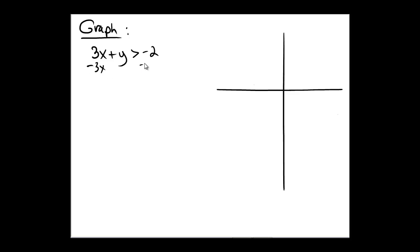Let me subtract 3x from both sides so that I get an equation that says y > -3x - 2. The reason I'm doing this is because it's easier for me to graph things like the y-intercept and then to recognize the slope. Because it's now in slope-intercept form, we can see that...